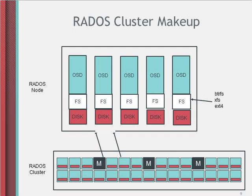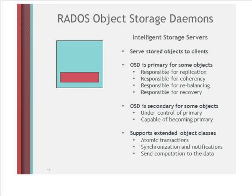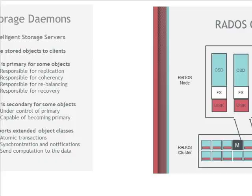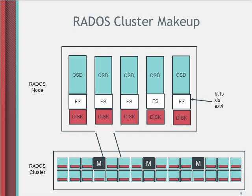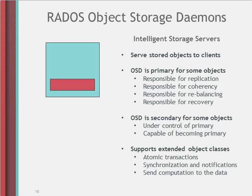The real value is added by the object storage daemons we put on top of those disks. Each one is an intelligent storage server that assumes complete responsibility for some subset of the objects. If there are 1,000 object storage daemons sitting on top of 1,000 disks, each one has complete responsibility for one-tenth of 1% of the data in the cluster. They manage their subset, passing data back and forth and cooperating to make sure it's properly managed. If an object storage daemon is the primary for some collection of objects, it's responsible for replication, coherency, rebalancing, and recovery in case of failure.